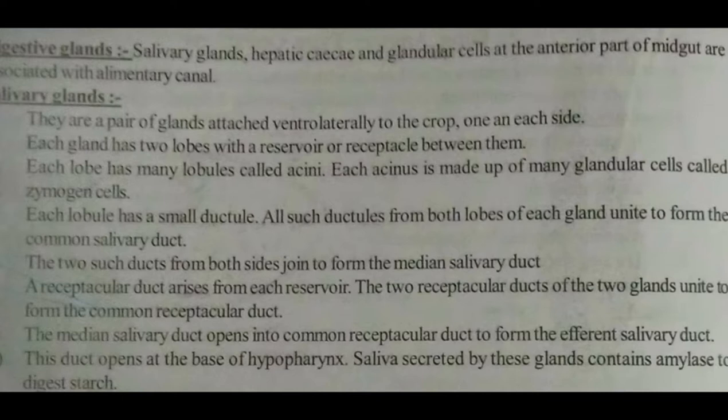The salivary glands are a pair of glands attached ventrolaterally to the crop, one on each side. Each gland has two lobes with a reservoir or receptacle between them. Each lobe has many lobules called acini. Each acinus is made up of many glandular cells called zymogen cells. Each lobule has a small ductule, and all such ductules from both lobes of each gland unite to form the common salivary duct.